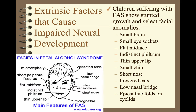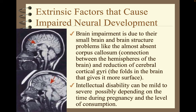Children suffering with FAS show stunted growth and select facial anomalies including a small brain, small eye sockets, flat mid-face, indistinct philtrum — the crease under the nose — thin upper lip, small chin, short nose, lowered ears, low nasal bridge, and epicanthic folds on the eyelids. Brain impairment is due to the small brain and brain structure problems like the almost absent corpus callosum — the connection between the hemispheres — and a reduction of cerebral cortical gyri, the folds in the brain that give it more surface area.